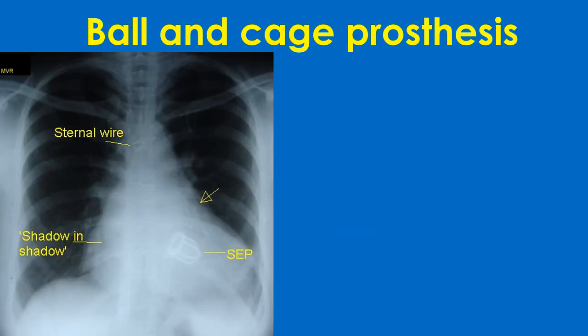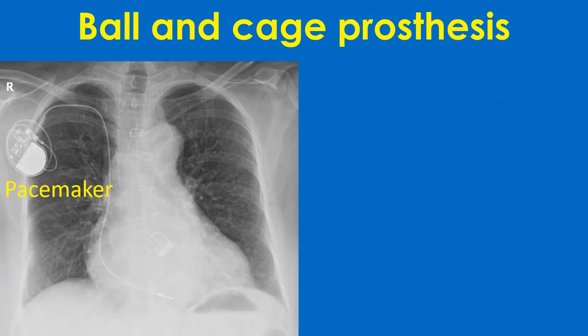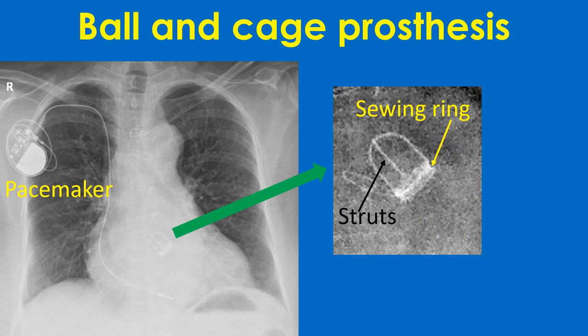This image is that of a Starr-Edwards prosthetic mitral valve. The valve ring and 4 struts are visible, but the elastic poppet, being non-radiopaque, is not visible. The cage is directed downwards and to the left into the left ventricle for a mitral prosthetic valve. For the aortic Starr-Edwards valve, there are only 3 struts, and the cage is directed upwards and to the right into the aorta.